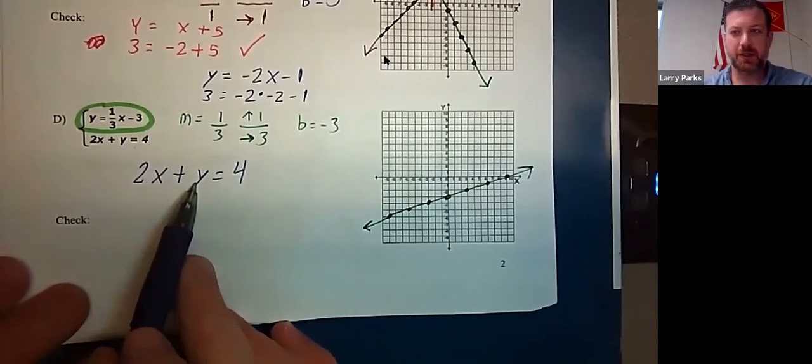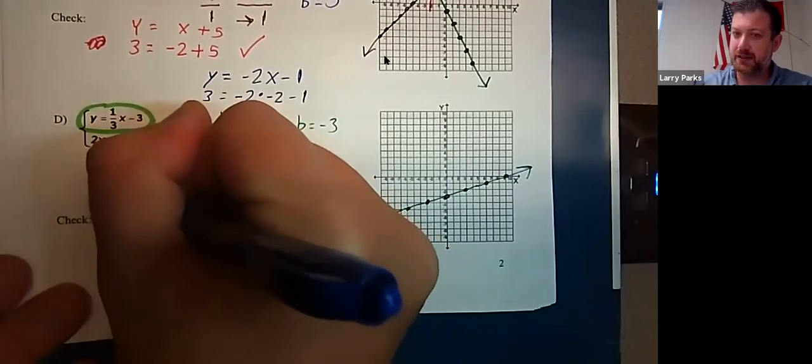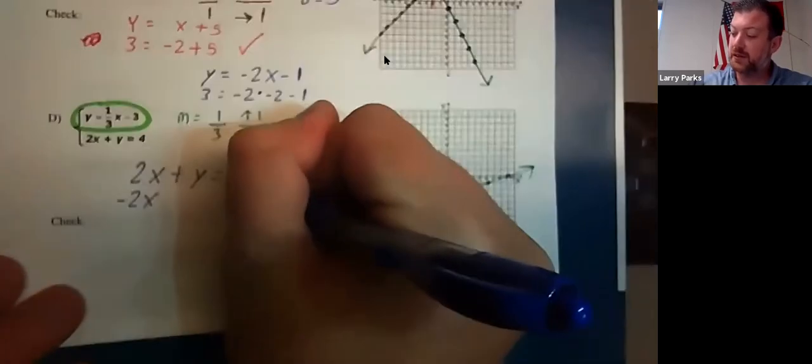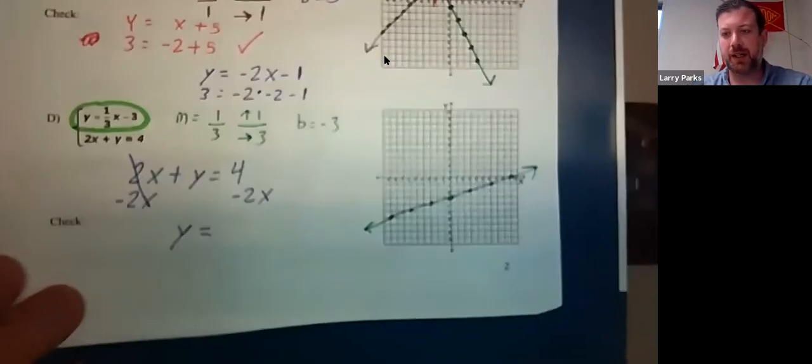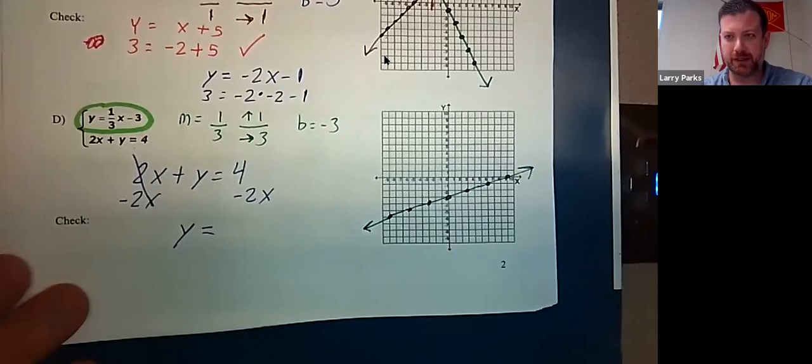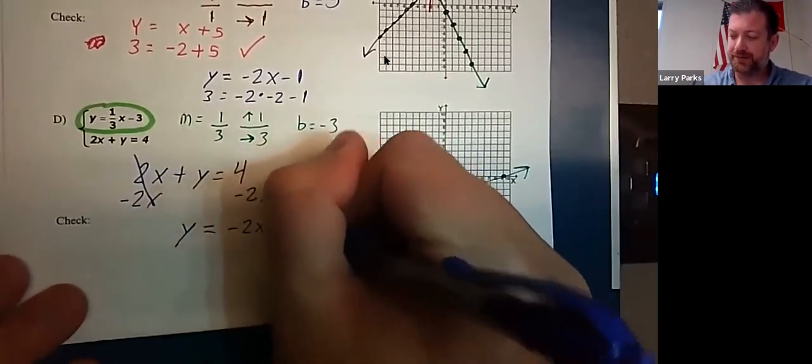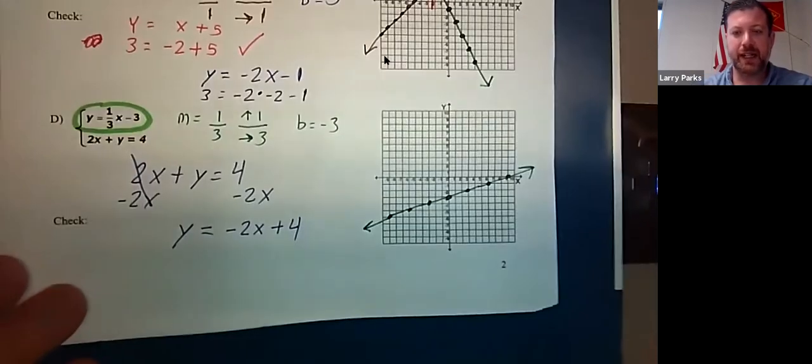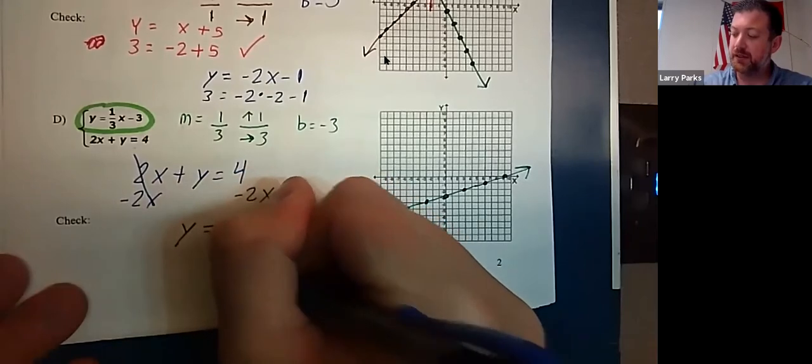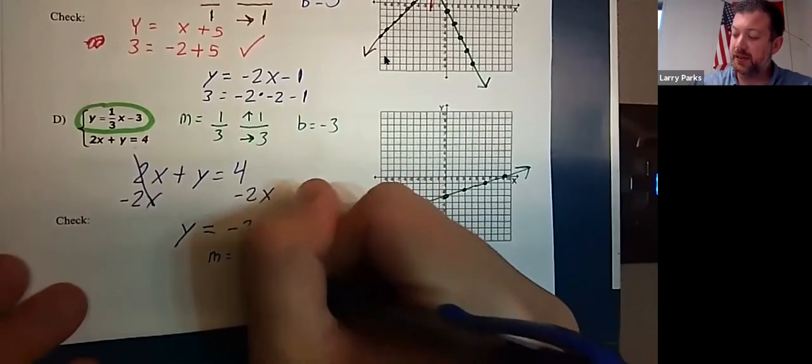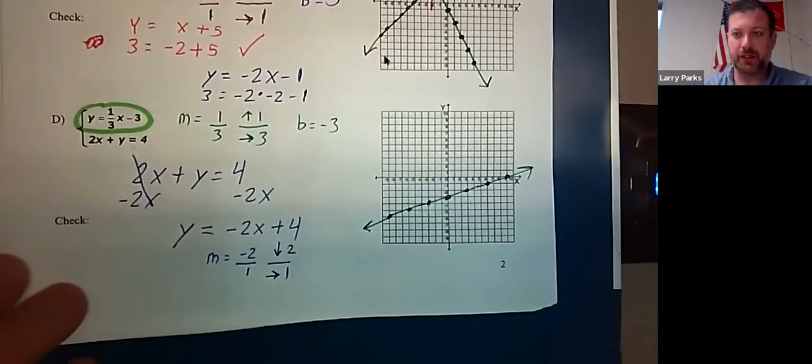Well, Y is almost by itself. It just has a 2x with it. So let's subtract 2x from both sides. And then 4 minus 2x. Do not combine. So we put the x first. And then your constant. And now I know my slope. It's negative 2 over 1. Which means you're going to go down 2. To the right one. And where do you start? You start at 4.